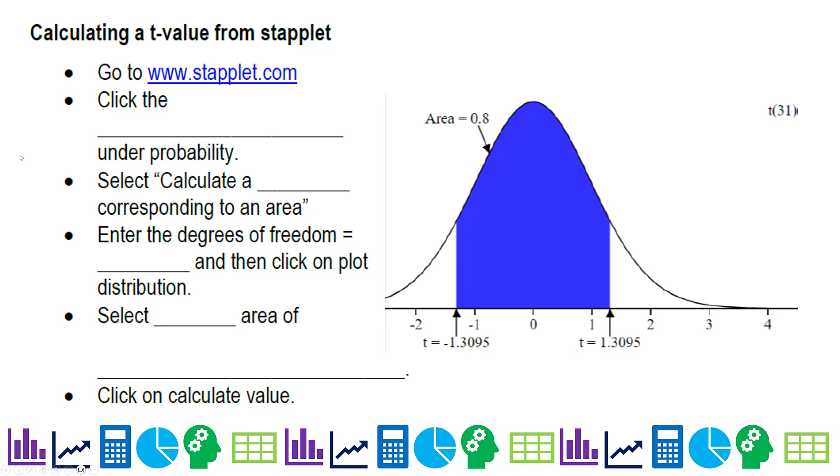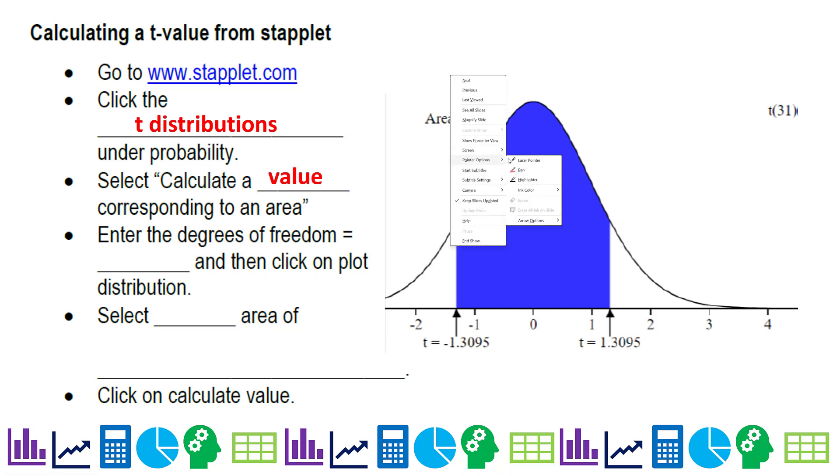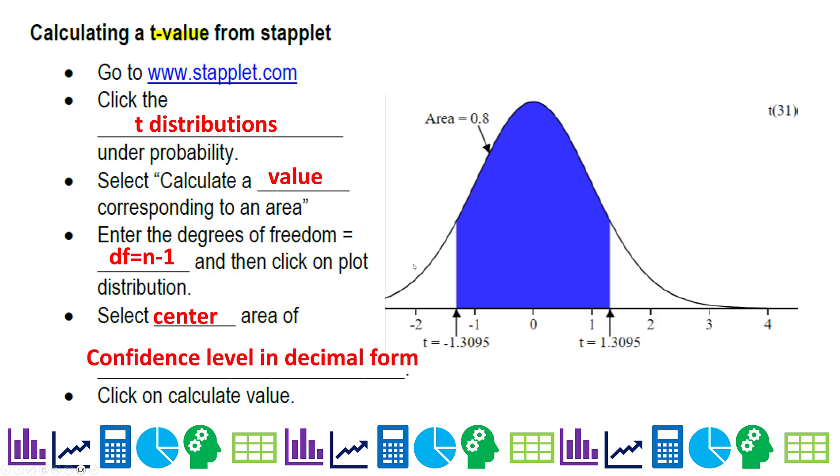So this is how we'll use Staplet to calculate your t-value. You go to staplet.com, click on t-distributions, and I'll show it to you. Under probability, look for t-distributions. Calculate a value. Remember, we're trying to calculate a critical value. So notice how it says a critical t-value. We're not doing an area, we're doing a value. Then enter the degrees of freedom, which is basically your sample size minus one. Then select the center area, because we want our critical value centered around our estimate. You're going to put the center area and the confidence level in decimal form, and then click on calculate value.